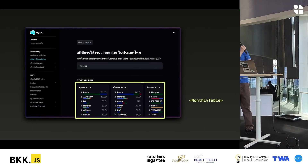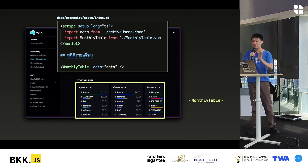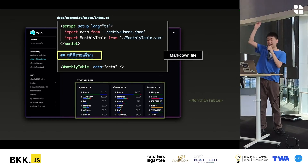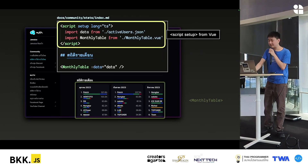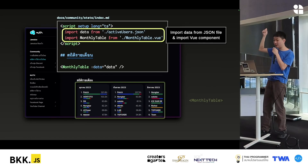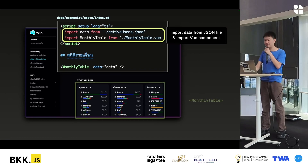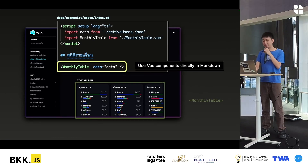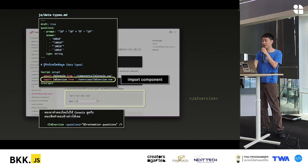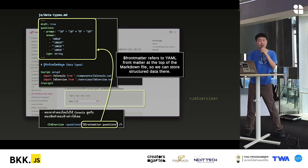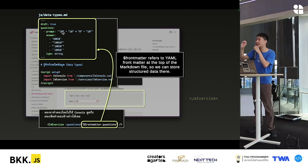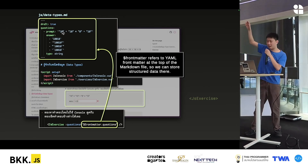Let's look at an example. This component is called the monthly table. Let's look at the code. You can see this file — it's index.md, a Markdown file. But in VitePress, we can import JSON files, Vue components, and use them directly in Markdown. We can use frontmatter, which allows us to pass objects, arrays, or structured data into components inside the Markdown. This allows the web content to be much easier to maintain.